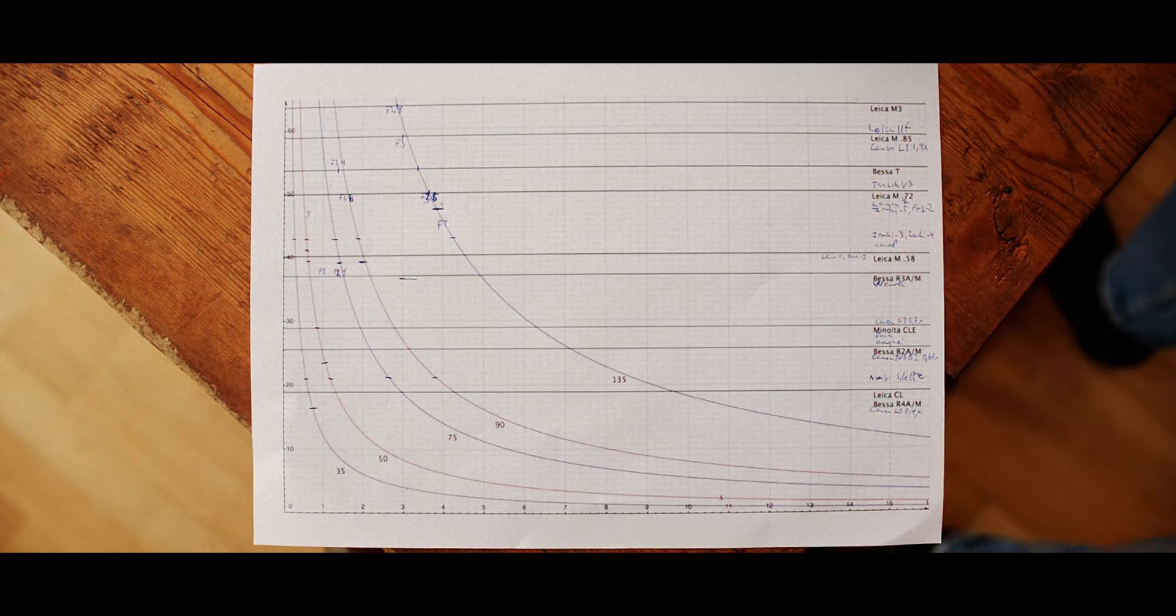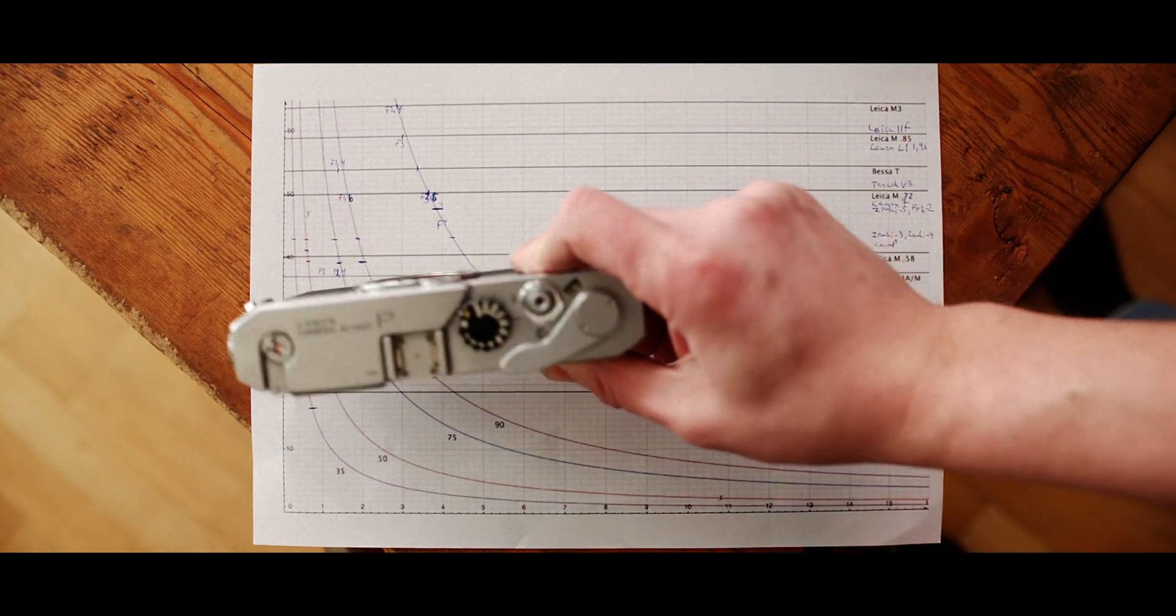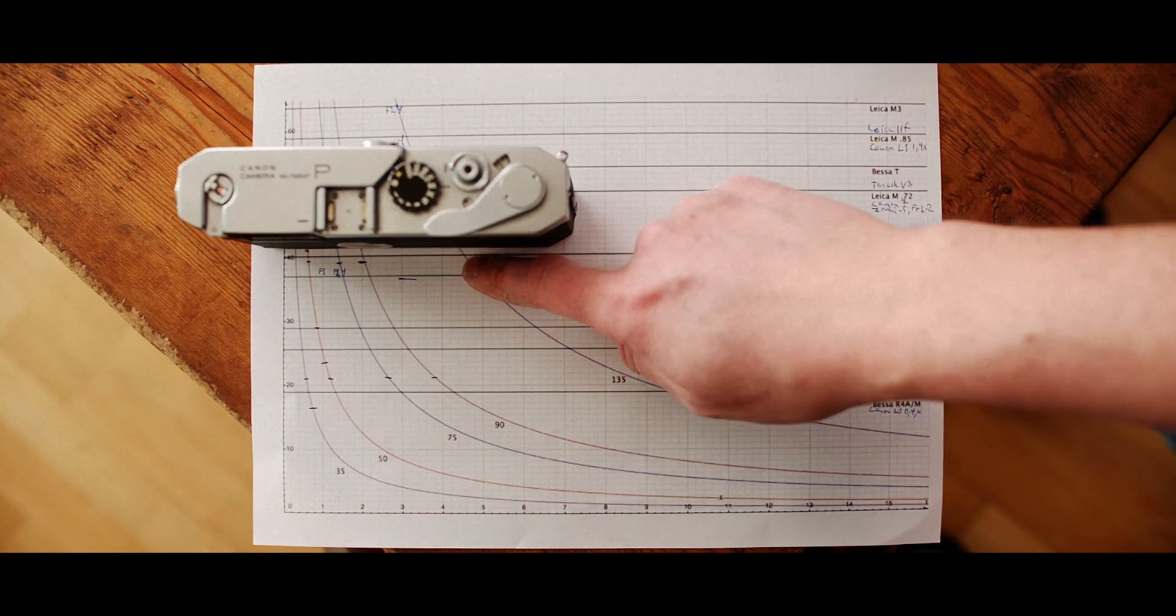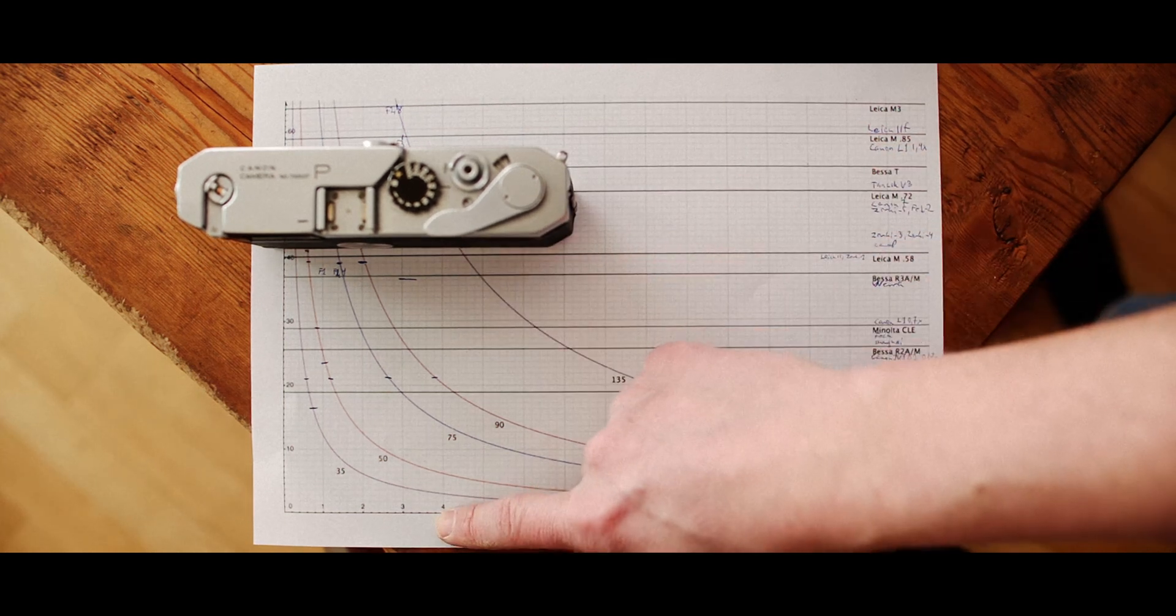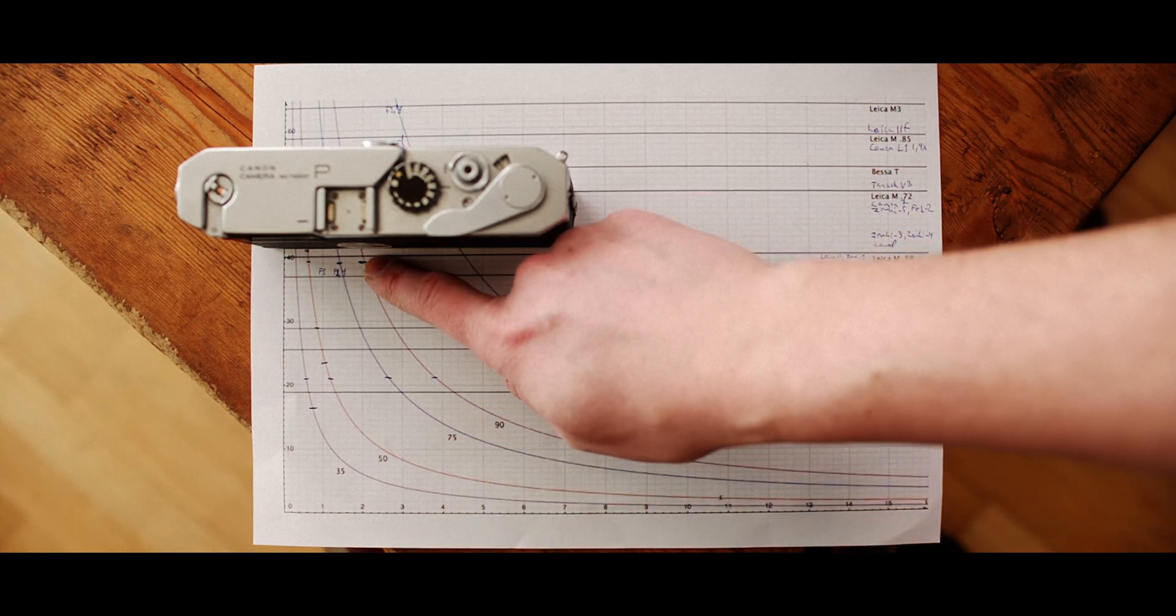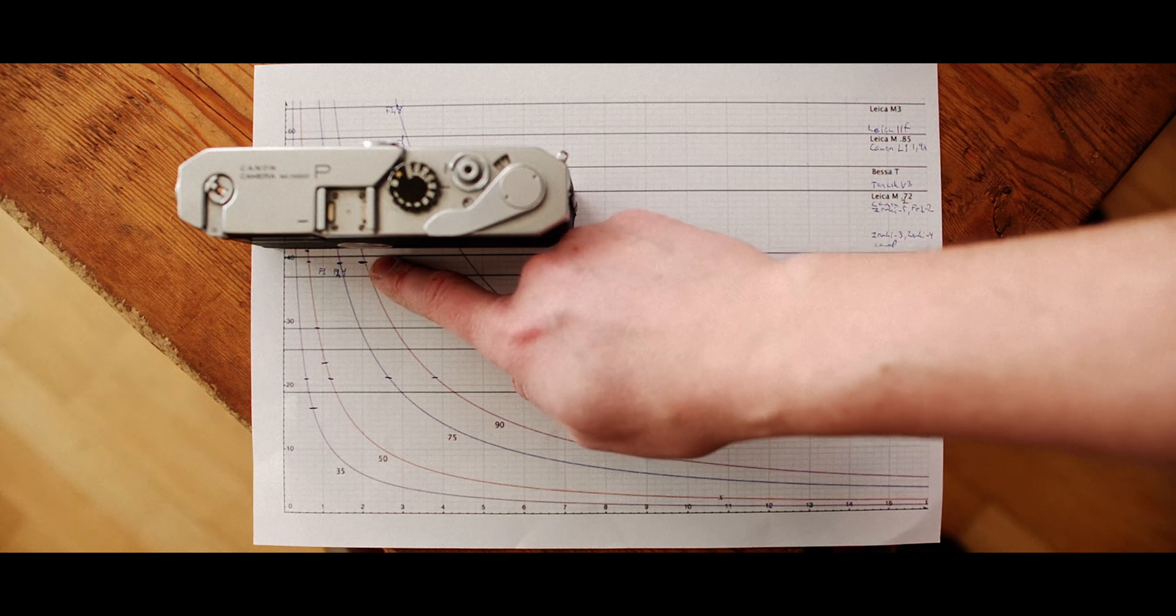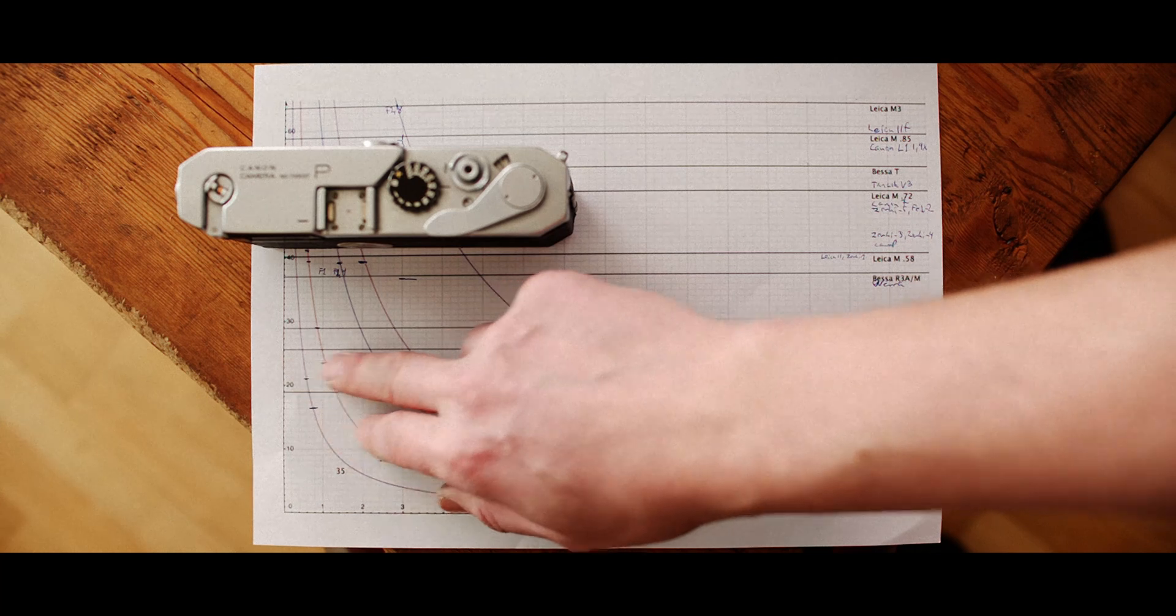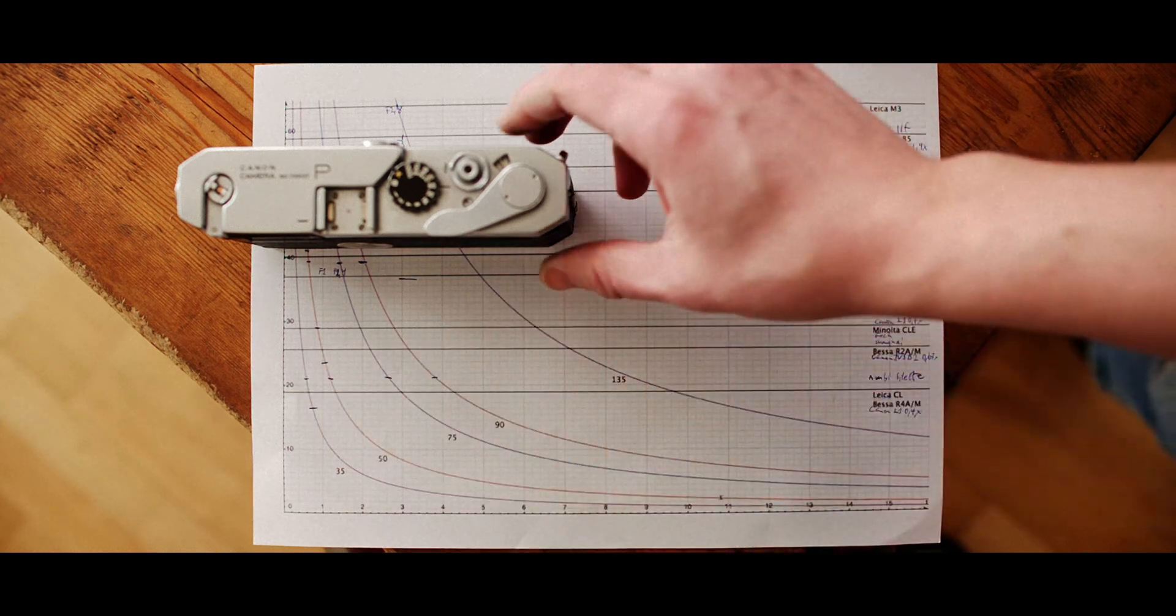The next one we have is the Canon P. And that's 41 millimeters. For a 135 millimeter lens it would still not be accurate at f/4. f/4.5 maybe. And other lenses like an 85 millimeter should be possible at f/2. Thereabouts. And the other lenses no problem at all.